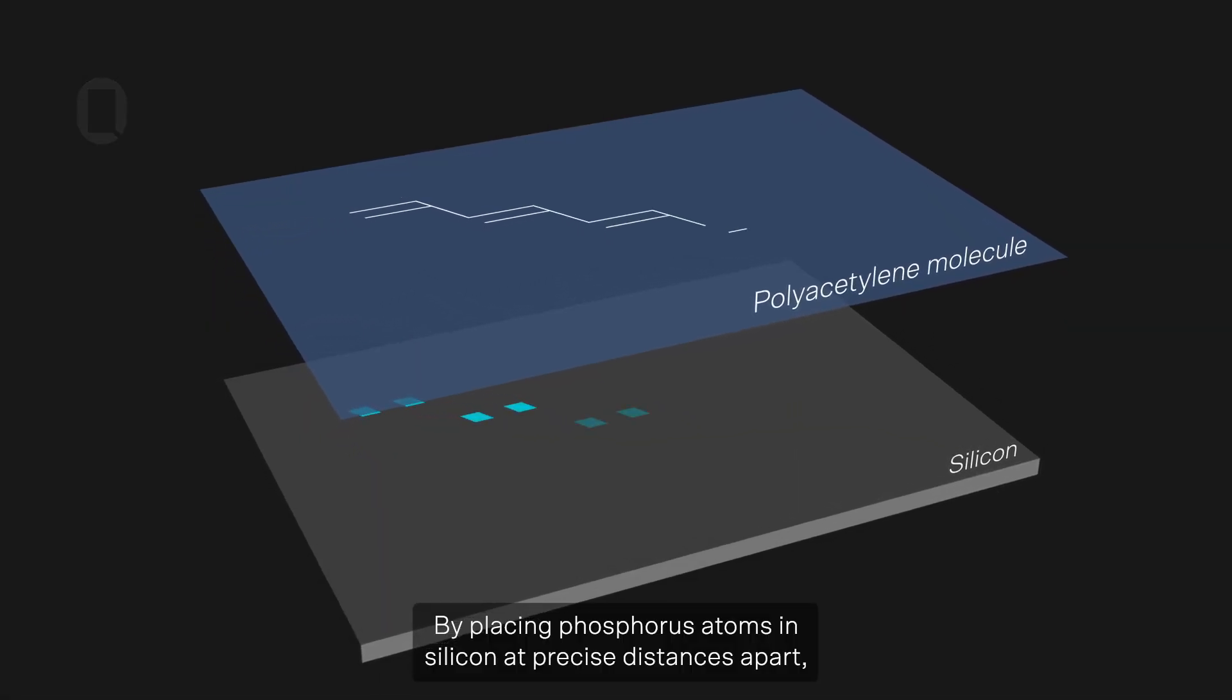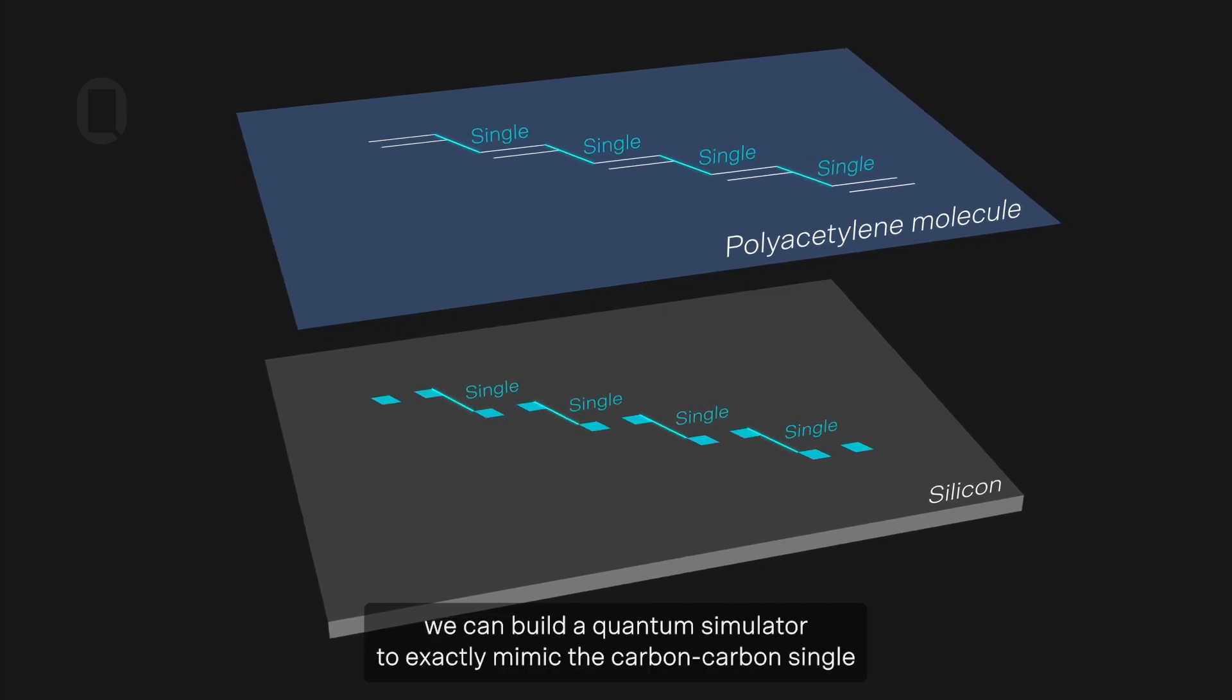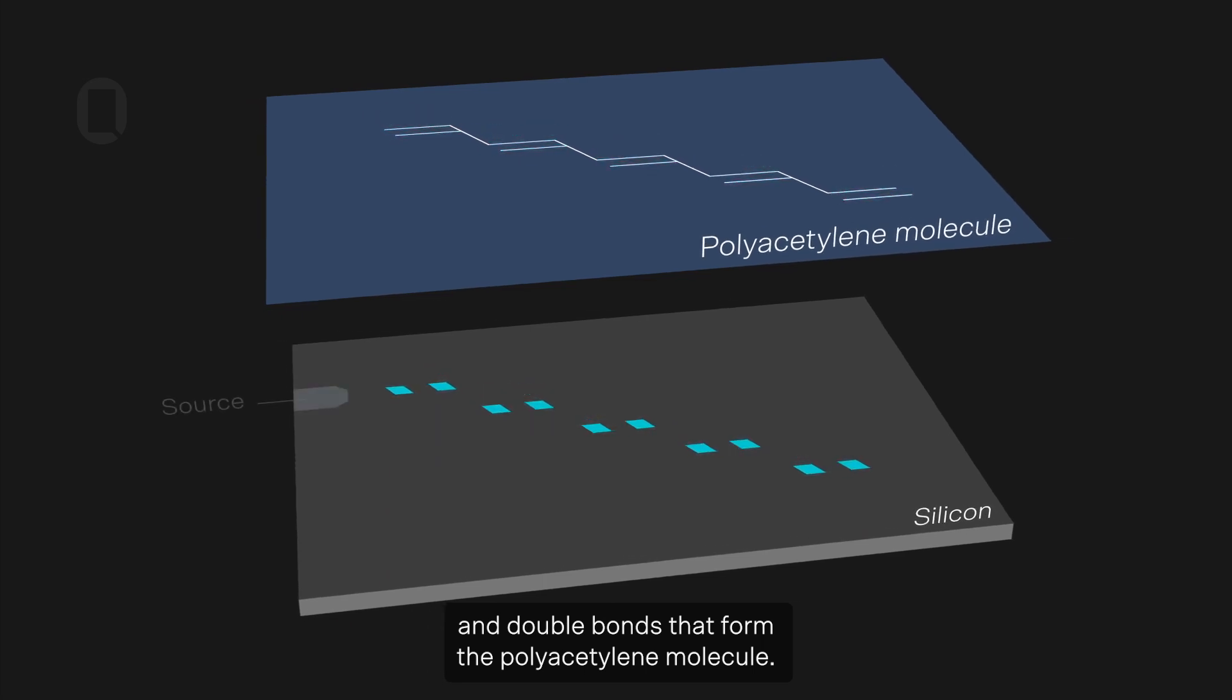By placing phosphorus atoms in silicon at precise distances apart, we can build a quantum simulator to exactly mimic the carbon-carbon single and double bonds that form the polyacetylene molecule.